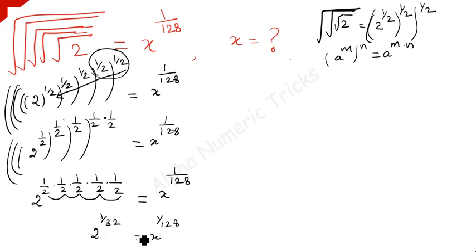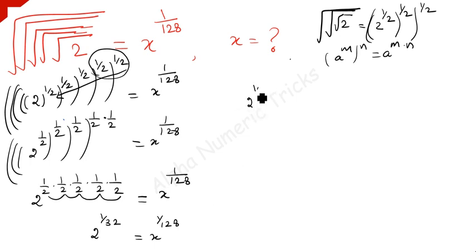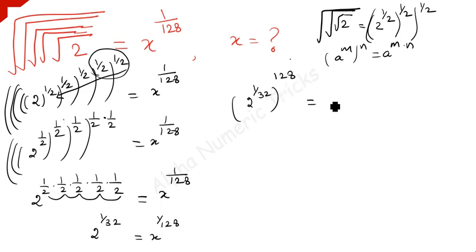Now, if we make the power of x to be 1, then we can easily get the answer, isn't it? So for that we have to take the 128th power on both sides. So, 2 to the power 1 over 32, whole to the power 128, is equal to x to the power 1 over 128, whole to the power 128.